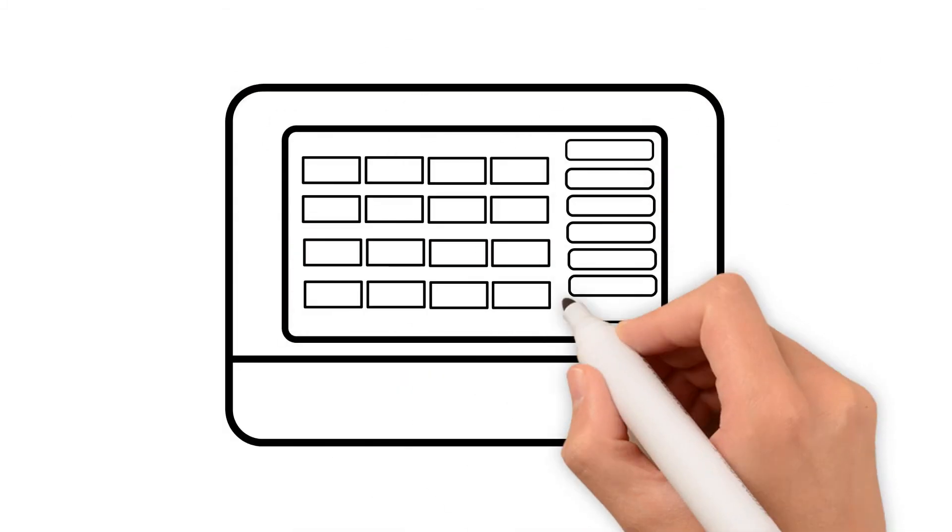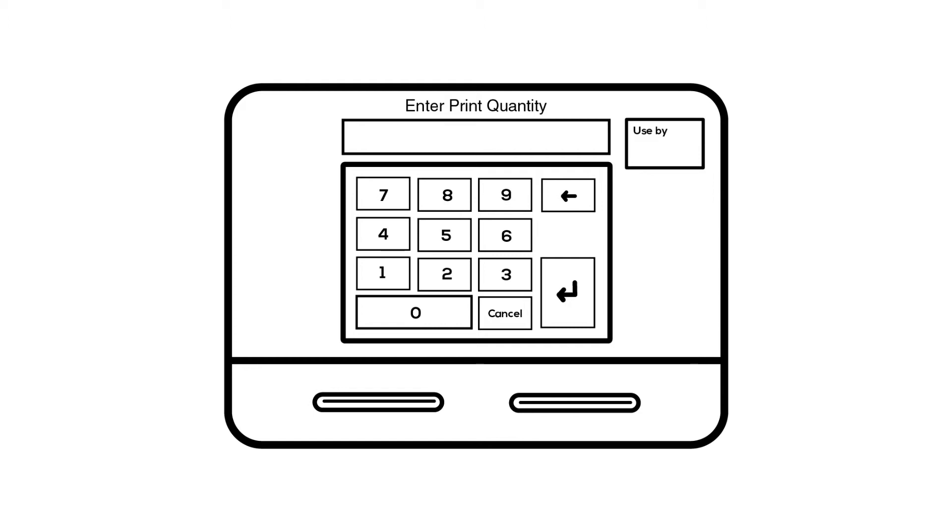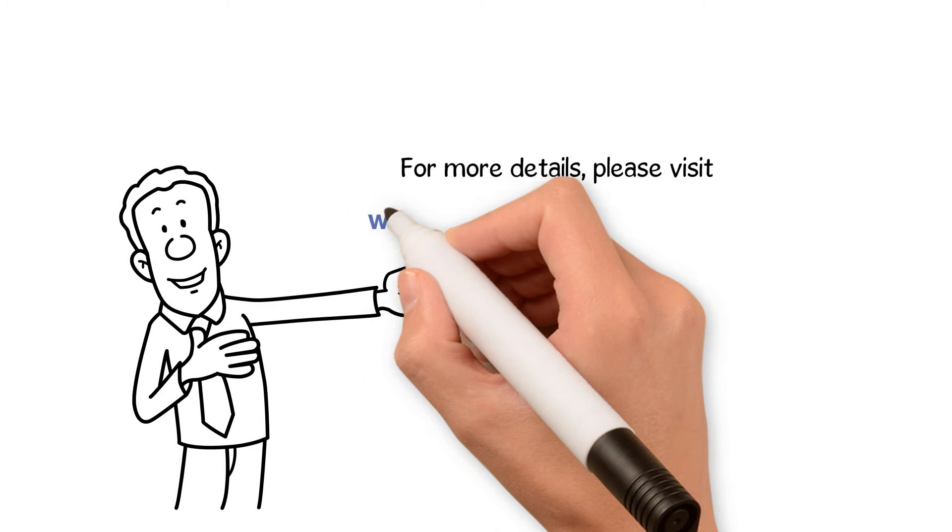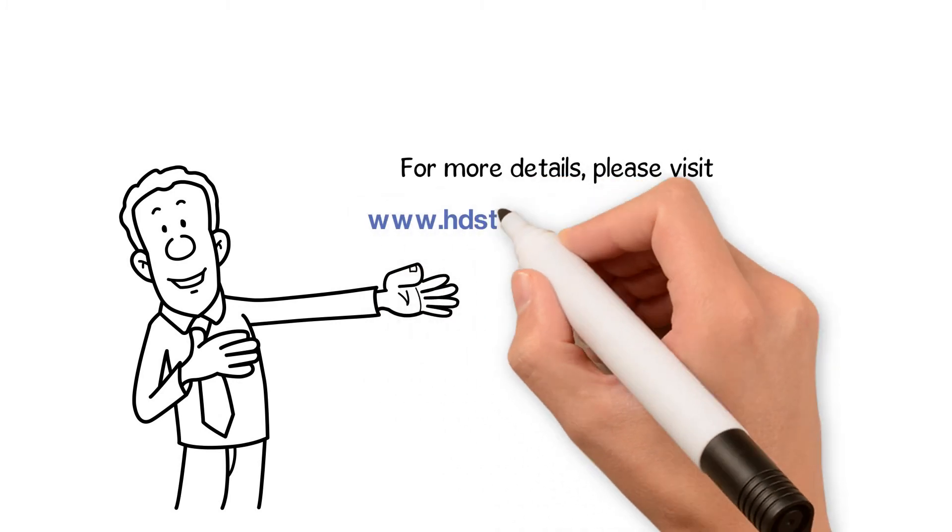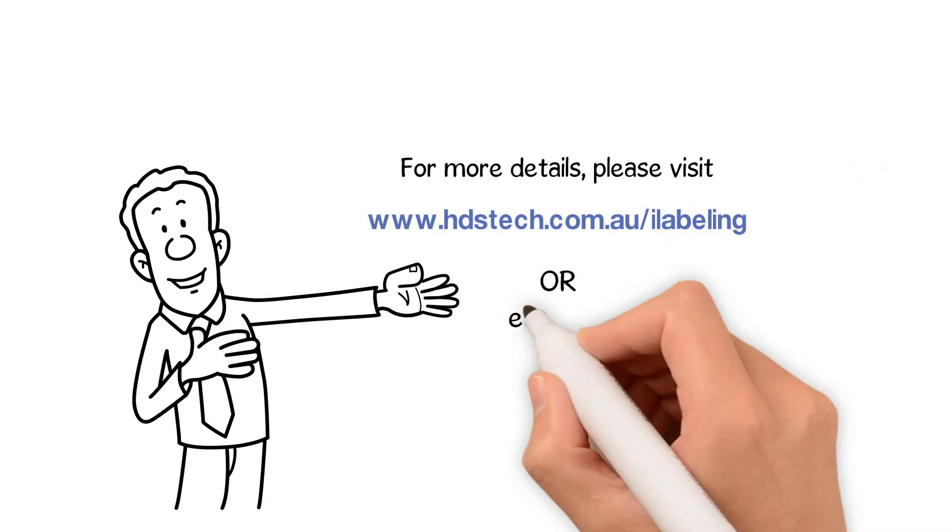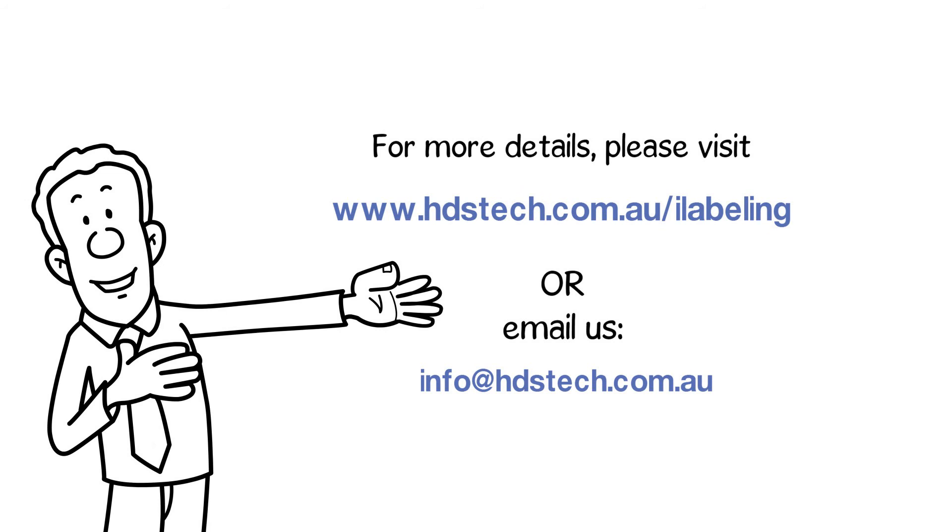Touch and print is the most efficient way to produce food labels and maintain food safety in your workplace. For more details please visit www.hdstech.com.au or email us at info@hdstech.com.au.